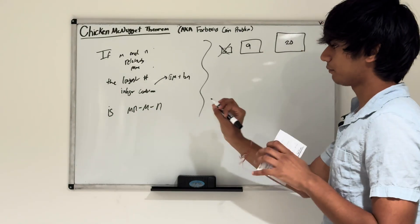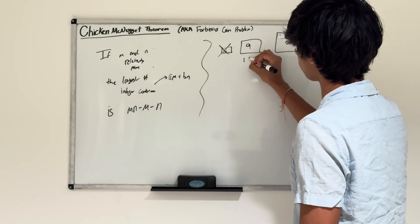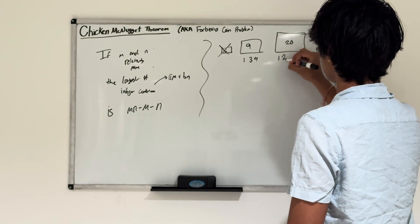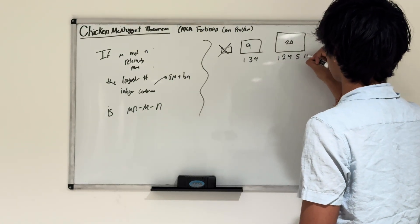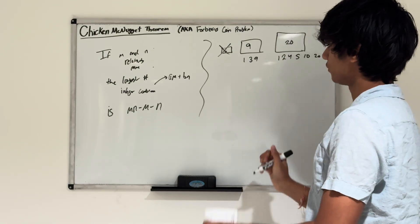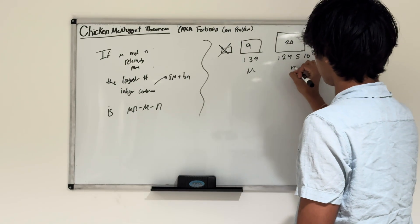9 and 20 are relatively prime because the factors of 9 are 1, 3, 9, and the factors of 20 are 1, 2, 4, 5, 10, 20. They don't match, so they're relatively prime. Now, all we do is plug it into the formula. Consider 9 as m and 20 as n.